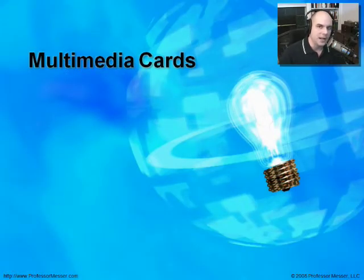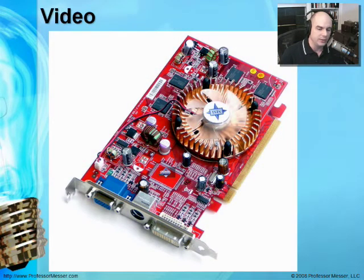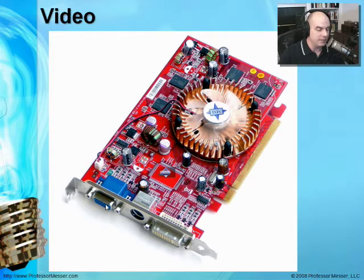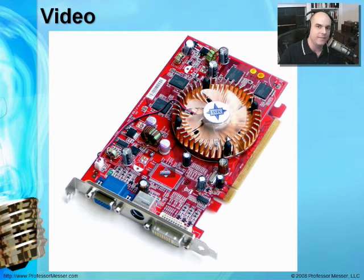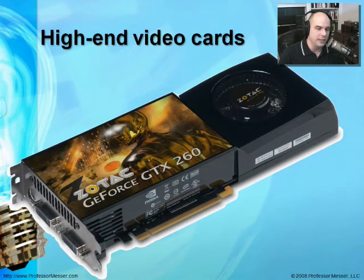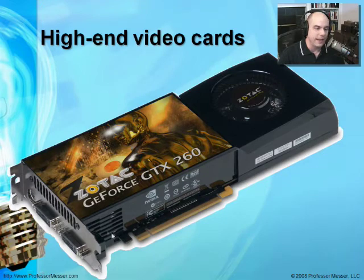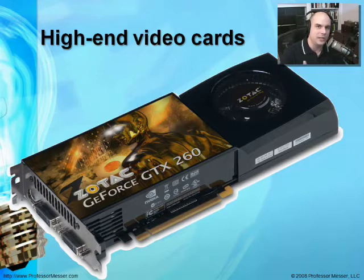Now that we understand what some of those slots look like, let's look at some adapter cards — starting with multimedia cards. Here is a PCI Express card used for video. Video cards really jump out at you: they have ports on the back for standard VGA or DVI connections, and they get very hot due to all the processing. So they usually have their own heat sinks and sometimes fans. Here's a high-end video card with artwork, it takes up two slots, has a fan built in, and two DVI slots, supporting SLI — using multiple video slots simultaneously for even faster throughput.